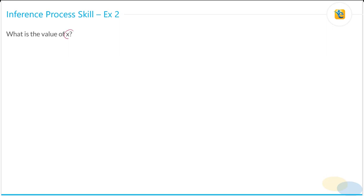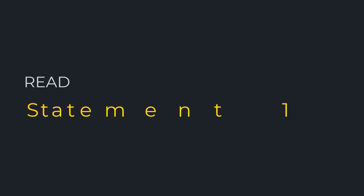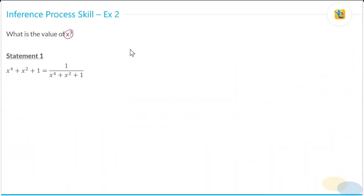The question is simply asking: what is the value of x? Statement 1 says x⁴ + x² + 1 is equal to 1 divided by (x⁴ + x² + 1).